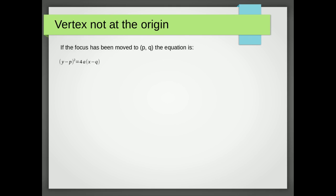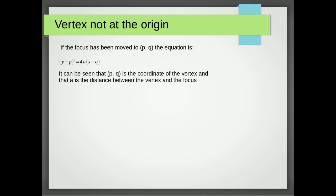What happens when the vertex is not the origin? If the vertex has been moved to the point (p, q), the equation becomes (y − p)² = 4a(x − q). Here p and q are the coordinates of the vertex — it was at (0, 0) before. Importantly, a is the distance between the vertex and the focus.